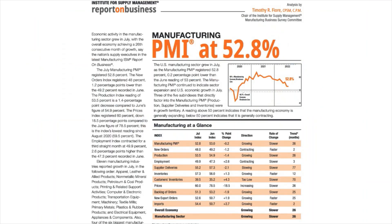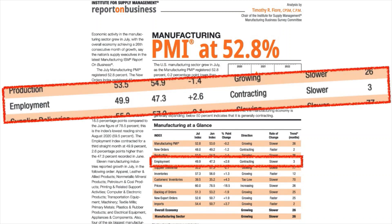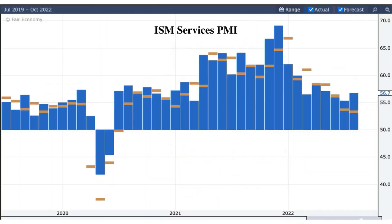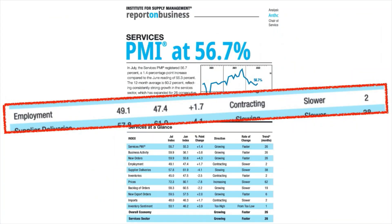Let's look at the employment component. Notice the big bold headline is positive, but look at the employment — employment is contracting. This is not positive for workers. So we gather that employment is not healthy. Let's look at the services PMI — it's a similar story. The trend is not exactly bullish. The headline is bullish, but look at employment. Unfortunately, the reporting cycle seems to be only beginning to pick up potential changes we are observing in recent days.